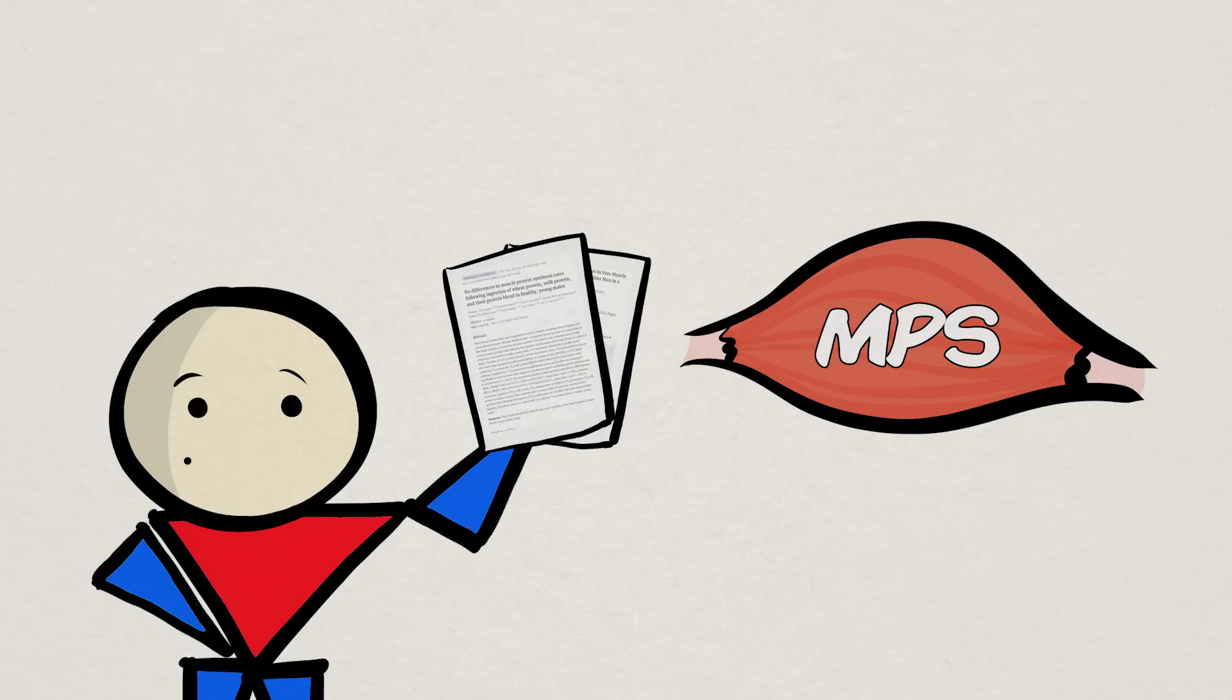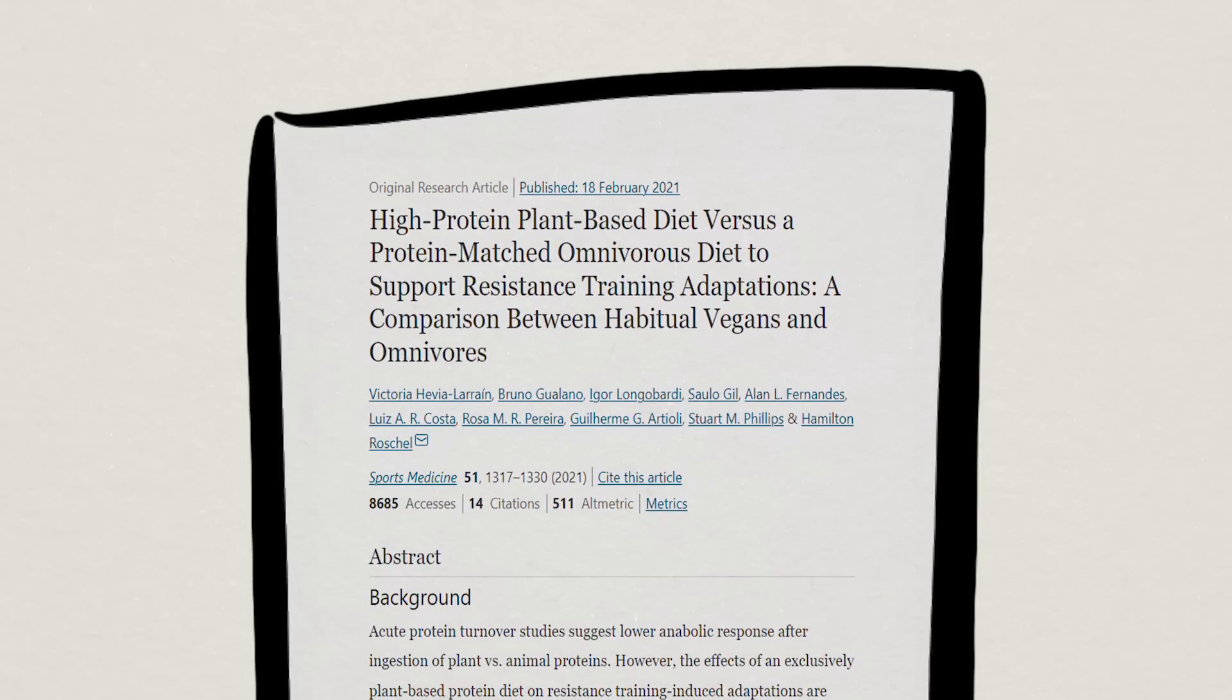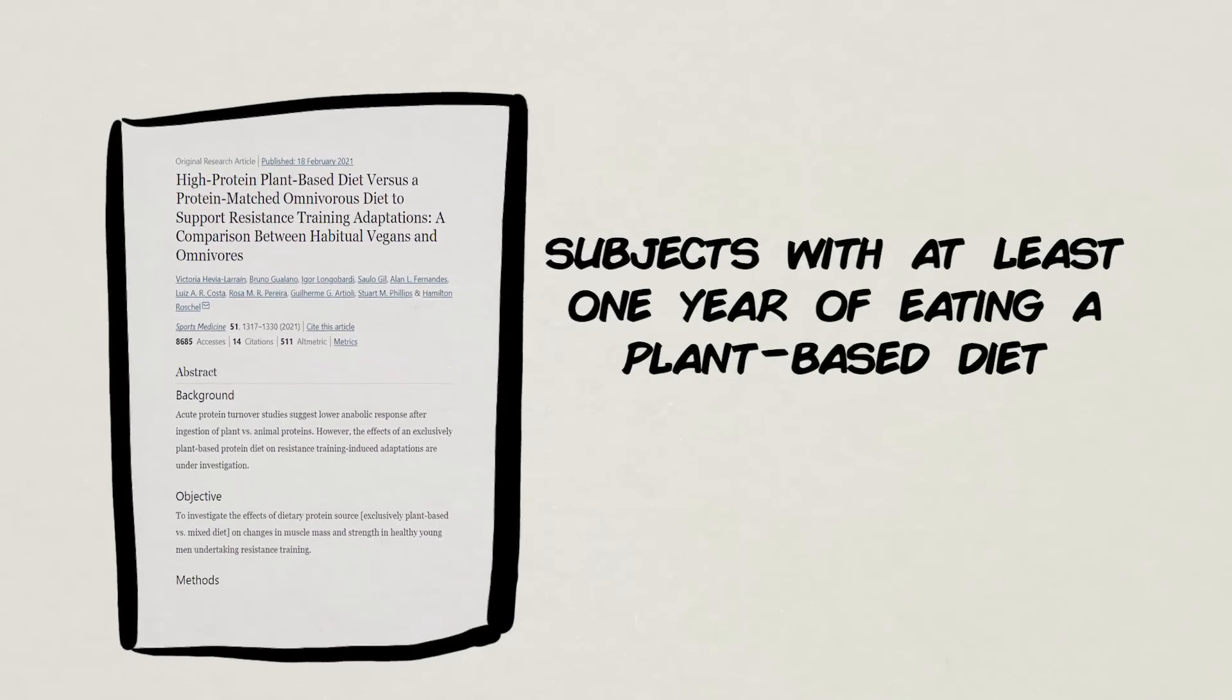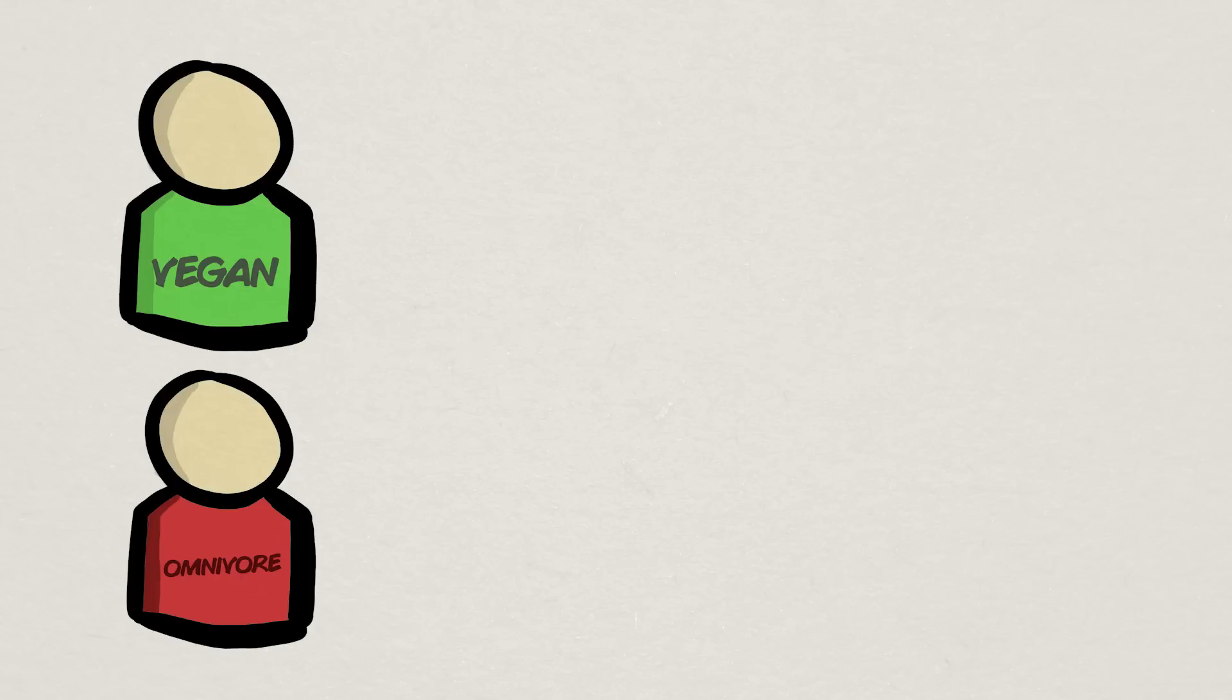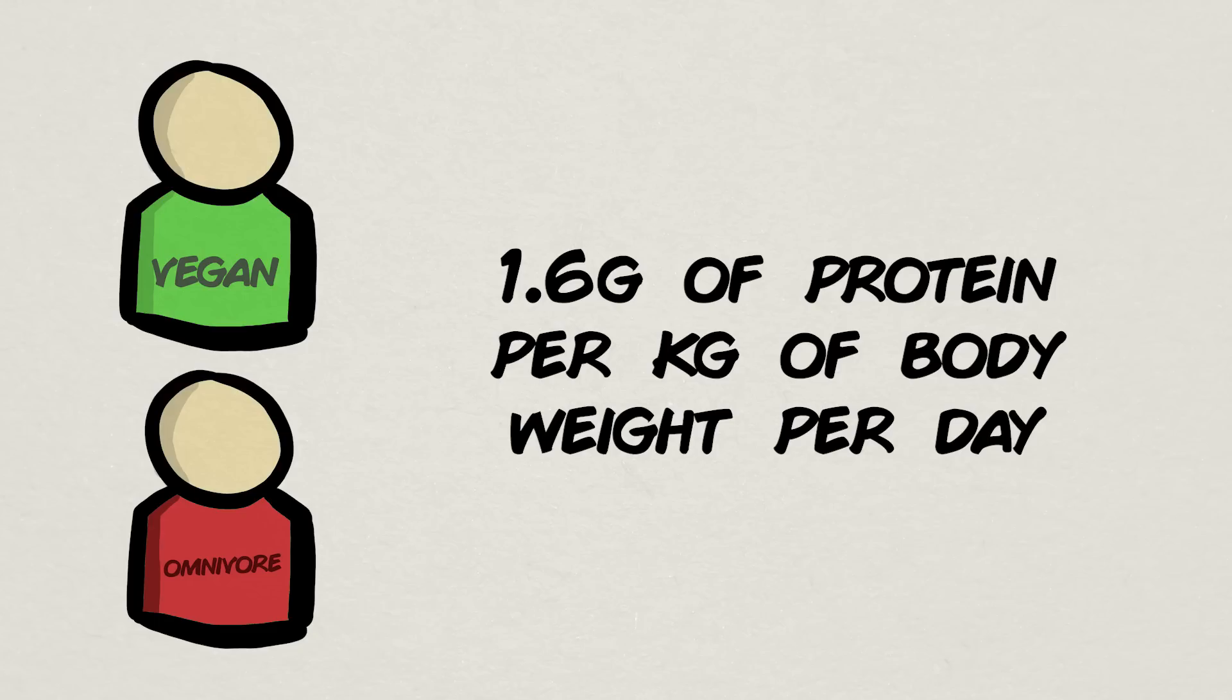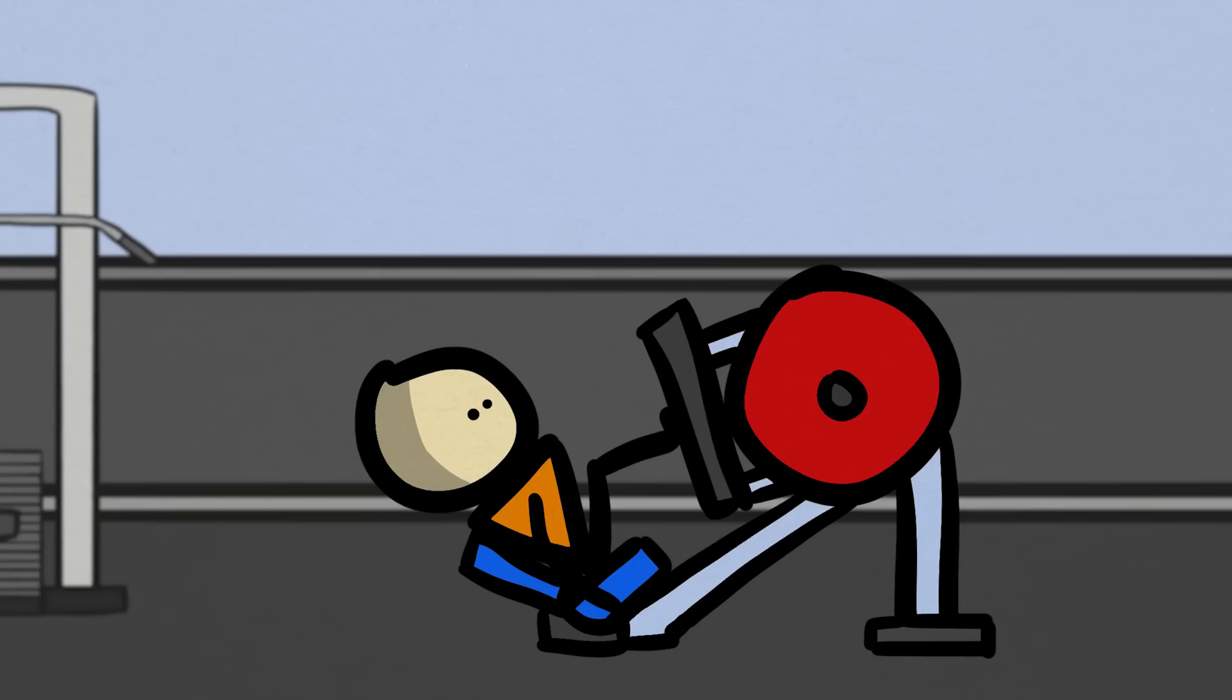Again, these studies are only on muscle protein synthesis and not muscle growth directly. In that matter, we currently only have one study, and it's the only study of its kind, that looked into subjects that exclusively consumed a plant-based diet for at least one year prior to the intervention. In other words, they were habitual vegans. For 12 weeks, 19 habitual vegan participants and 19 habitual omnivorous participants consumed a total protein amount equivalent to 1.6 grams of protein per kilogram of their body weight per day, reaching that amount through protein supplements—soy protein for vegans and whey protein for omnivores. They also resistance trained their legs twice a week.